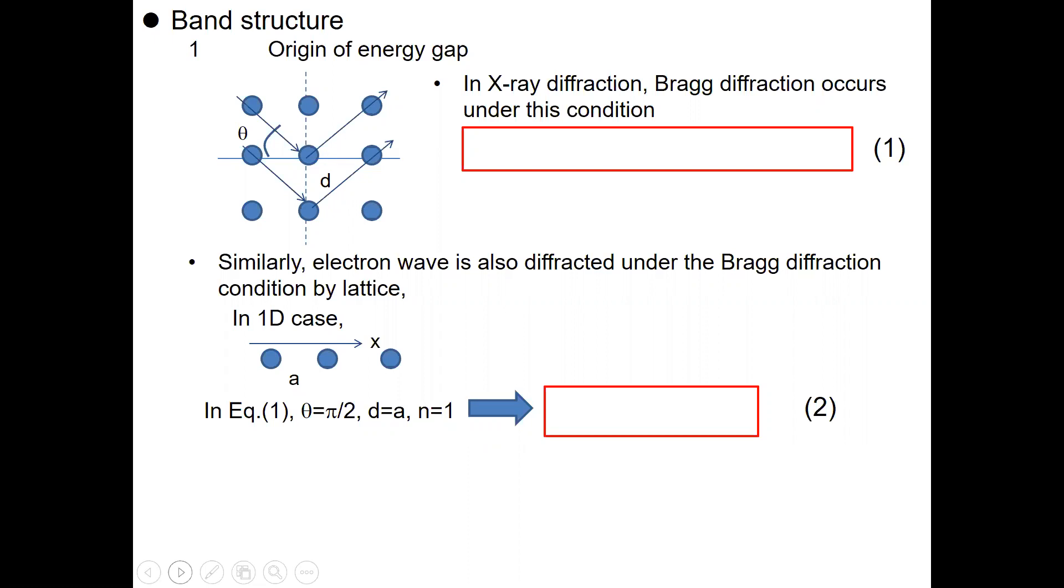Based on the similarity to X-ray diffraction, the X-ray diffraction is the analytical method used for structural analysis of the crystal. These circles indicate the atoms, and when the X-ray is coming with some angle, it is deflected under the Bragg diffraction condition.